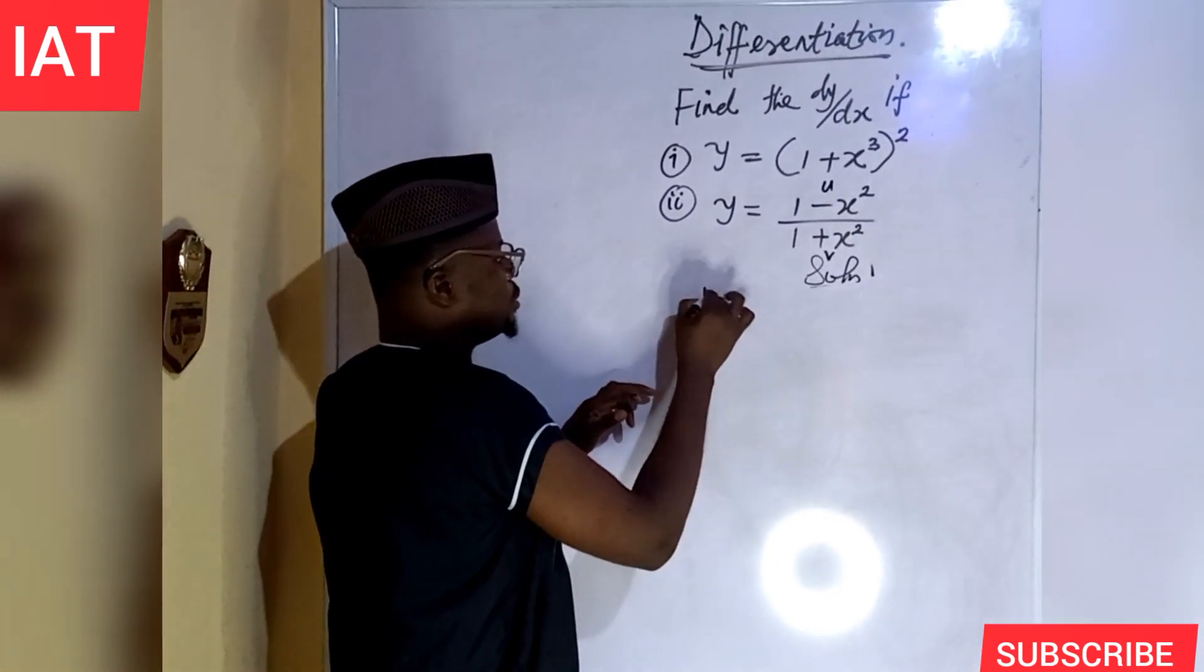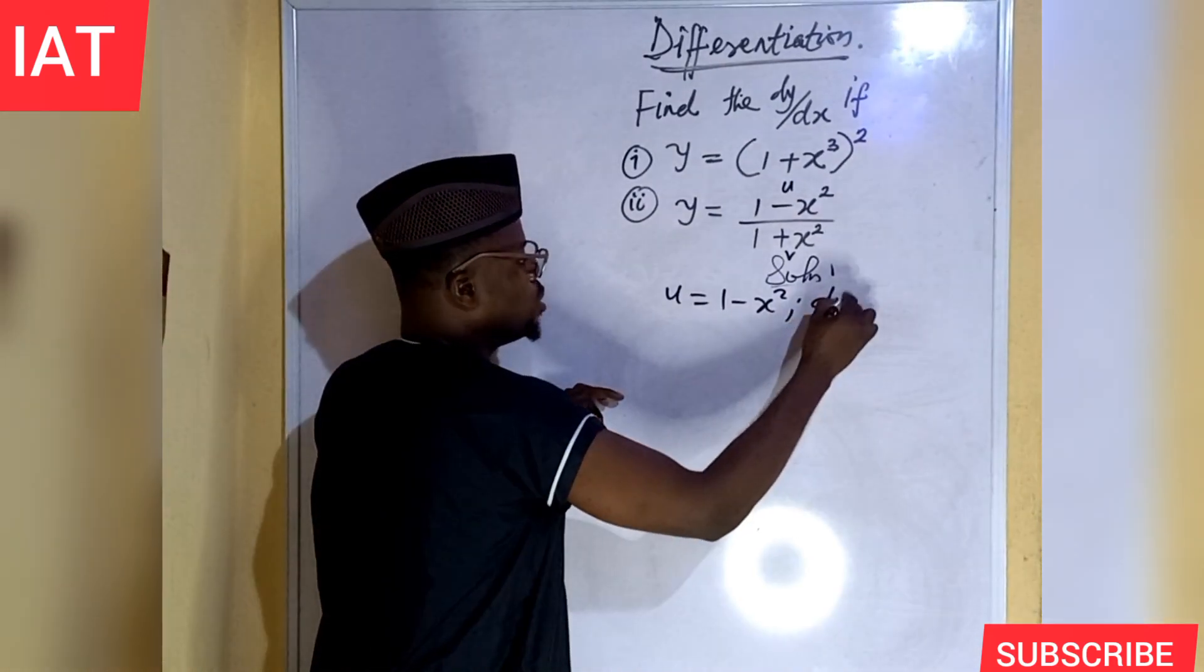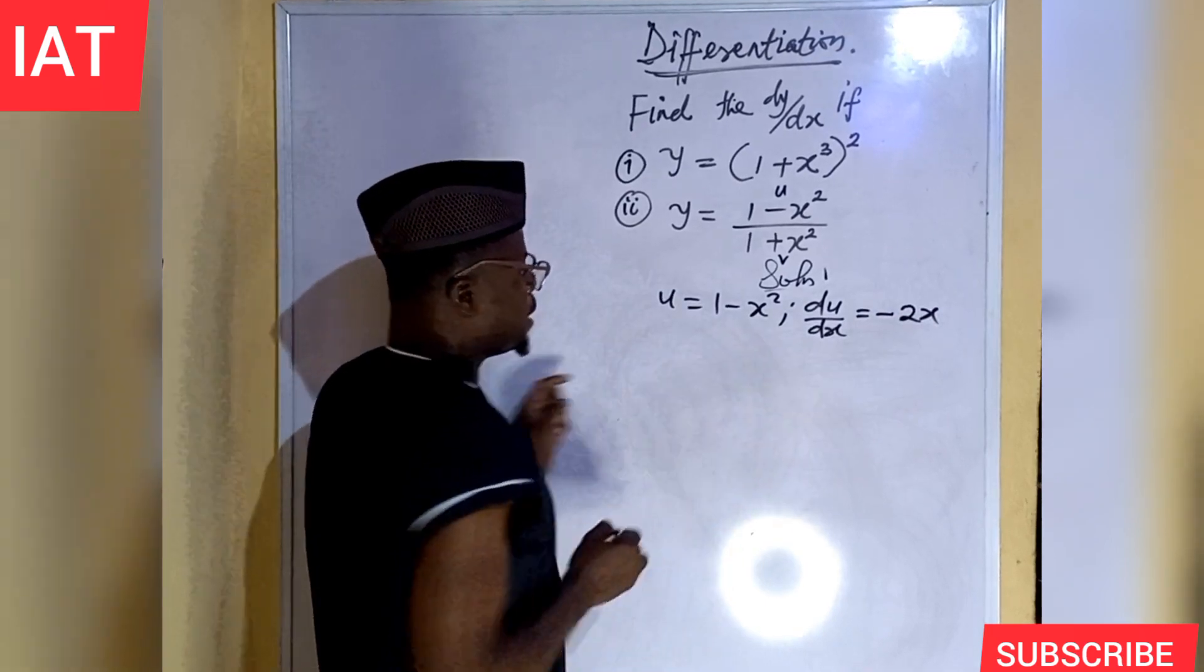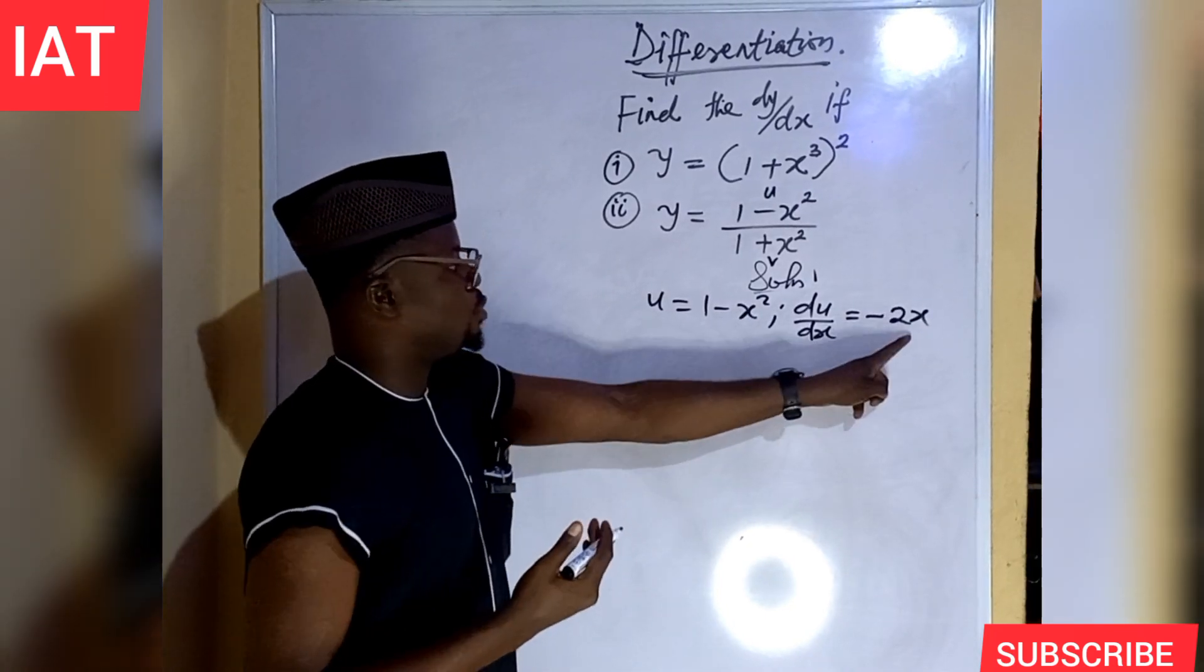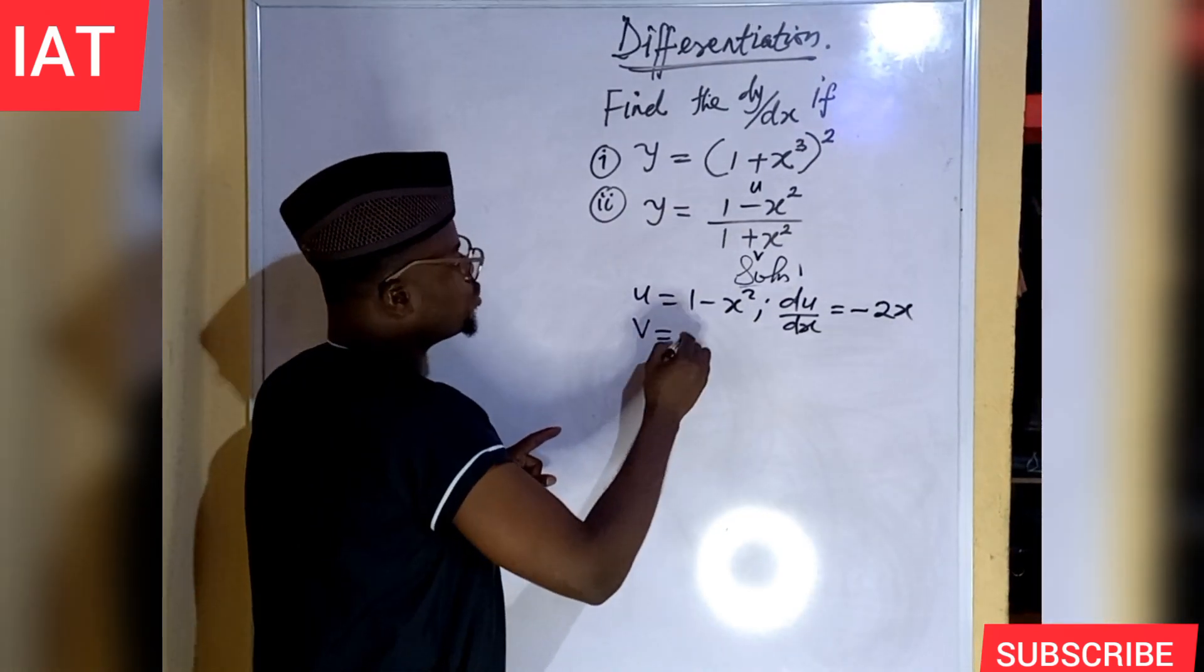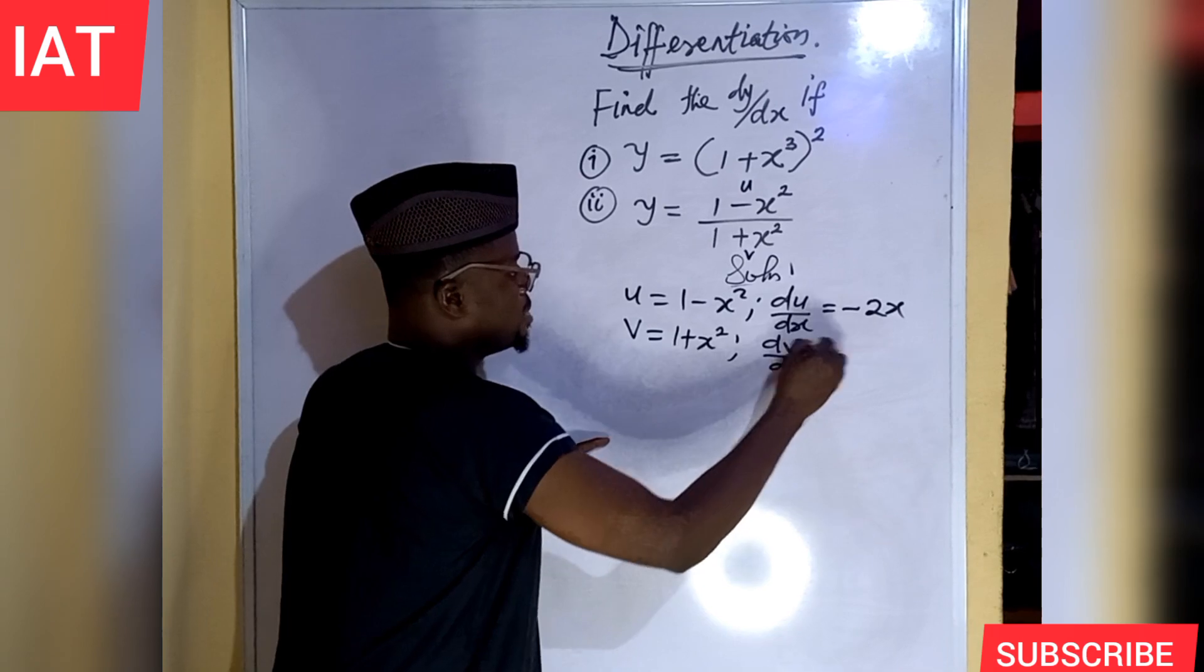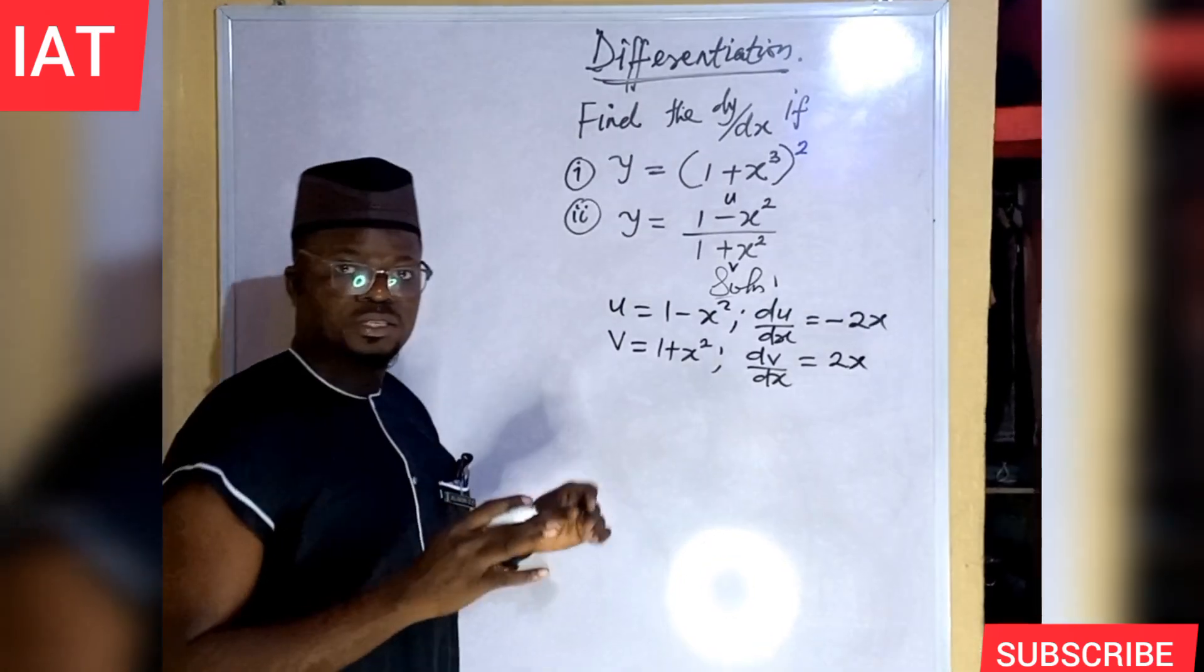We will assume the numerator here to be our u and then the denominator to be our v. That way, I can easily spell out that u equal to 1 minus x squared so that I can differentiate this u with respect to x. And that will give us minus 2x. Because the differentiation of a constant, we said it earlier, is 0. And the differentiation of x squared is 2x. This negative sign follows this. And that's how we have it there. Again, v is equal to 1 plus x squared. So, if we check the derivative of v with respect to x, the result of this will be just 2x. We've done the necessary thing we are supposed to do.